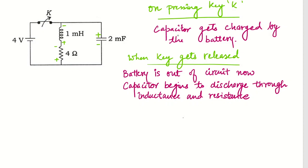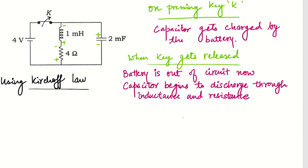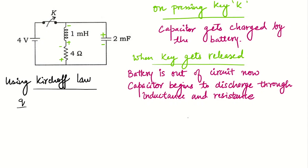This is a circuit. On pressing the key K, the capacitor gets charged by the battery. Once the capacitor gets fully charged, we release the key and the battery is out of the circuit. Now the capacitor begins to discharge through the inductance and the resistance. Using Kirchhoff's law, at any instant T, the voltage across the capacitor is Q over C, which equals the voltage across the inductance plus the resistance — this is minus L di/dt and minus IR.